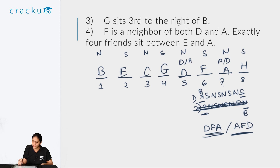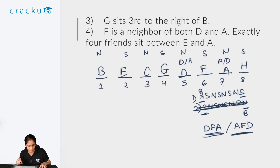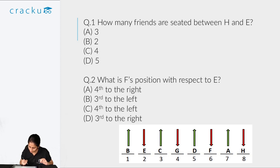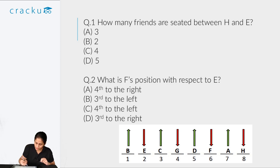Now that we have all the information, we can answer the questions. The first question asks how many friends are seated between H and E. We can see that C, G, D, F, and A are seated between H and E, so there are five people seated between H and E.